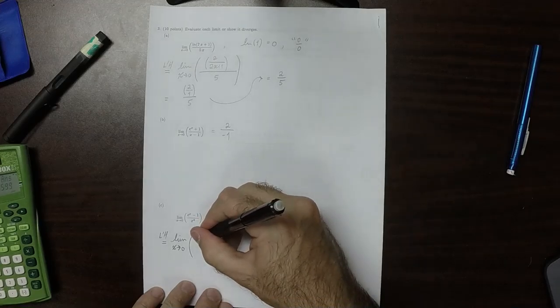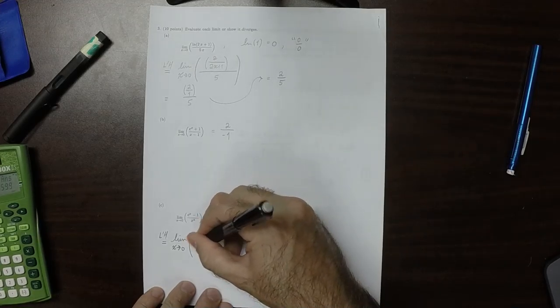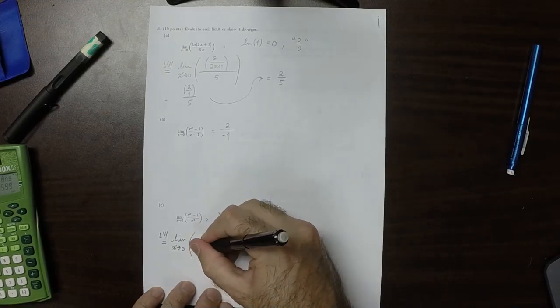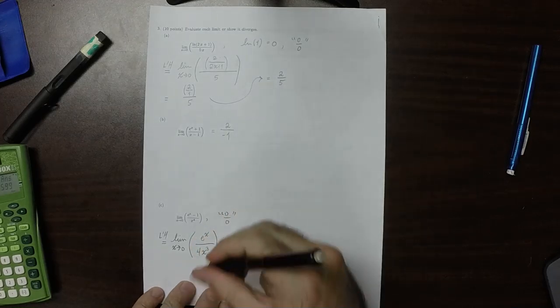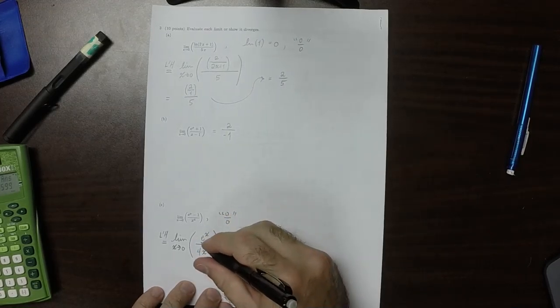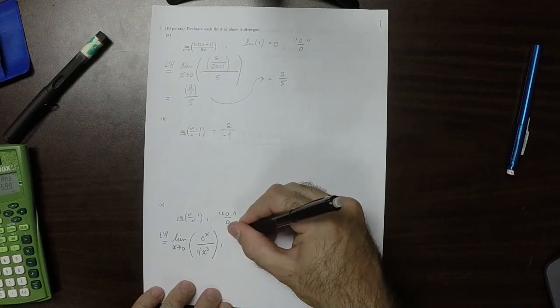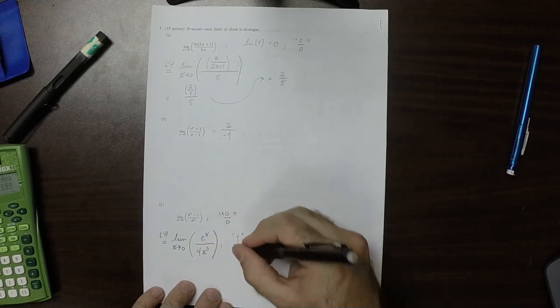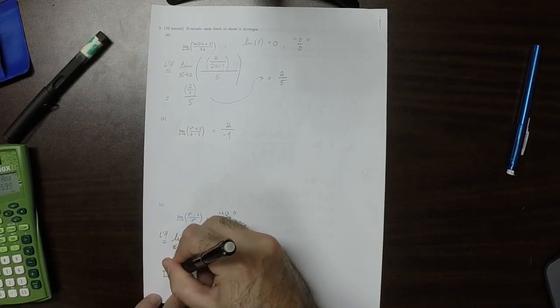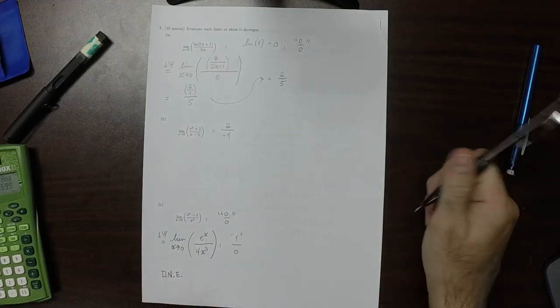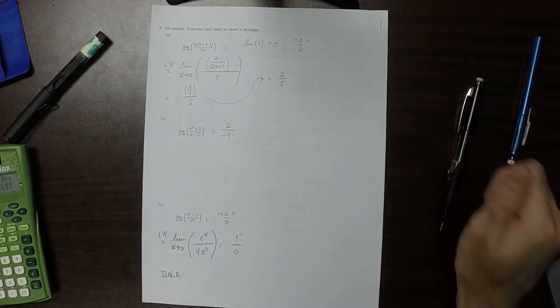So that would be, the new numerator would be e to x, and the new denominator would be 4x cubed. Now, the numerator at the limit point is 1, and the denominator is 0. So this limit does not exist. And that's the answer.